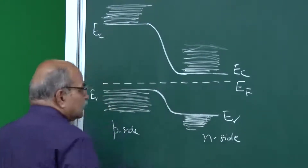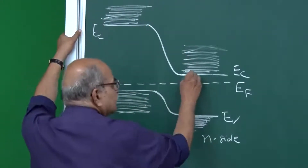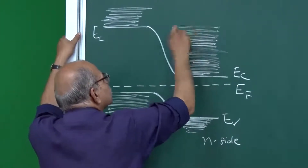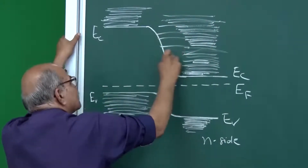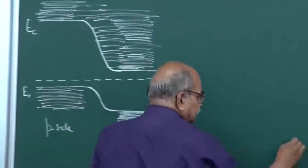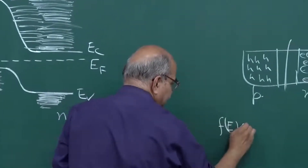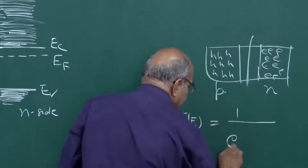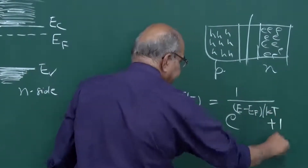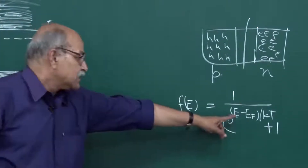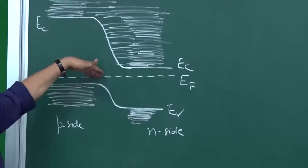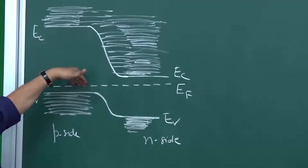Now, how many electrons are in these quantum states, how many are in those quantum states, and so on? For that, you have to go to the Fermi energy. You have the Fermi function f(E) = 1 / (e^((E - EF)/kT) + 1). This gives the probability. At E equal to EF, the probability is half. So right at EF, if there is a quantum state there, the probability would be half.